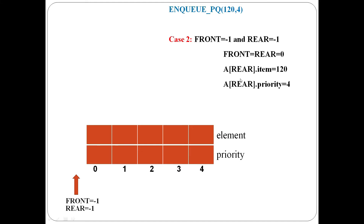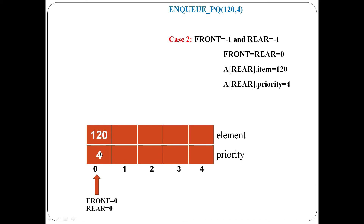Case two: front equal to minus one and rear equal to minus one means the priority queue is currently empty. Front and rear are set to zero, and the item with its priority is inserted at that location.